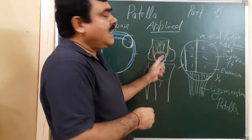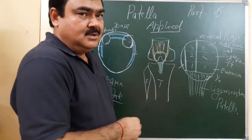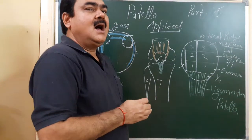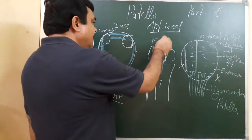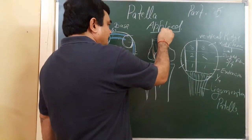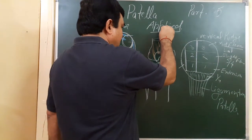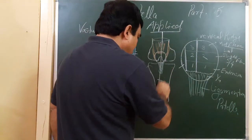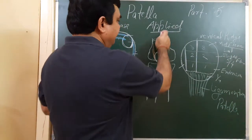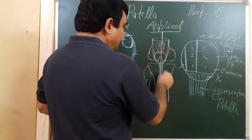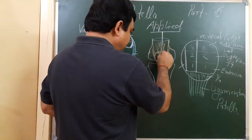The patella has a normal tendency to dislocate outward, because this is the long axis of the femur and this is the long axis of the tibia.